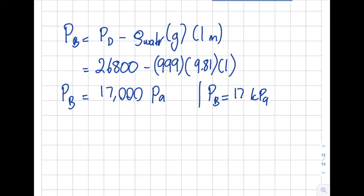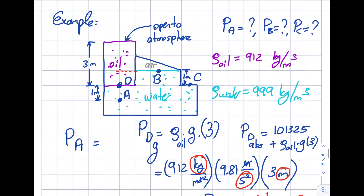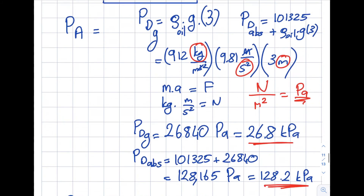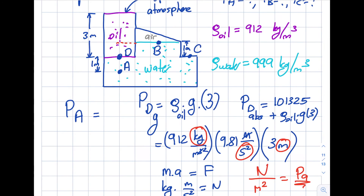So PB = 17 kilopascals gauge — a nice round number. Now, I never knew the pressure of the air in this system, right? Well, now you can find it. The air pressure is the same as PB: 17 kilopascals. It's the same right over here.